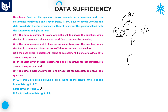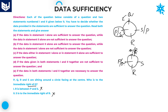Now let us take statement two alone. Total 4 members are there. S is immediate right of R — only these two members are fixed. You don't know the positions of P and Q. Because you want to know the immediate right of Q, but we don't know the position of Q. If Q is at one position, immediate right is R; if Q is at another position, immediate right is P. So by using the second statement also, you will not get the answer.